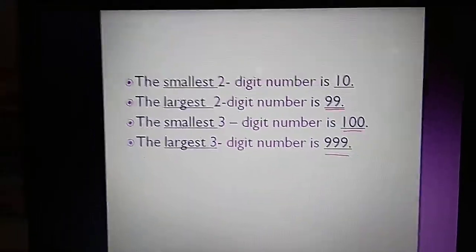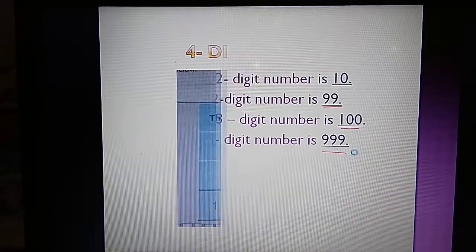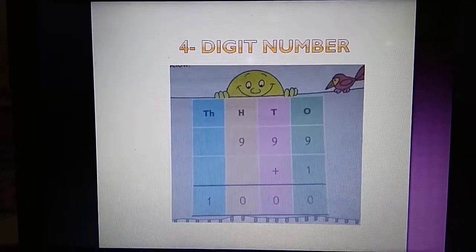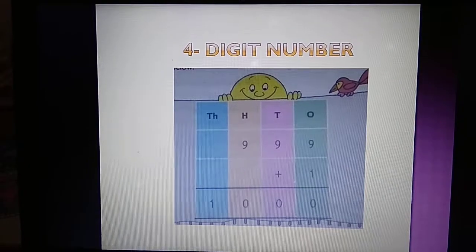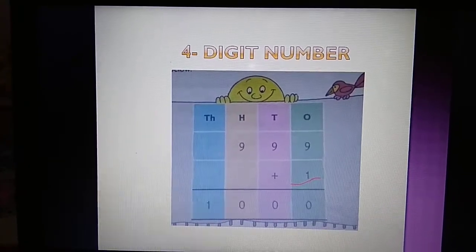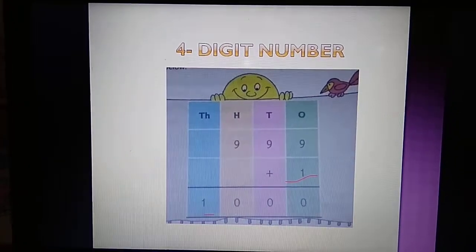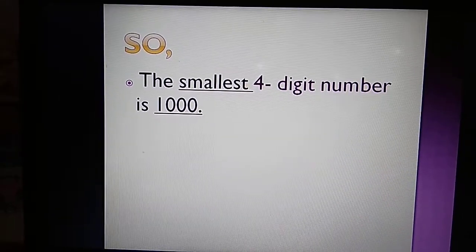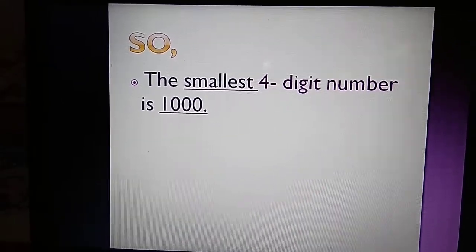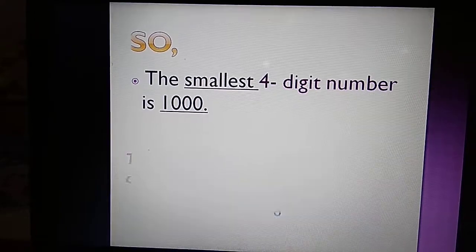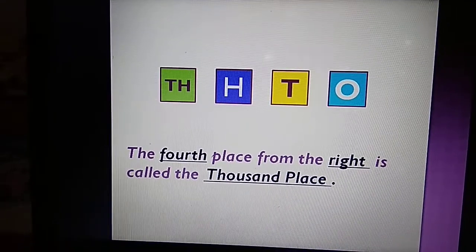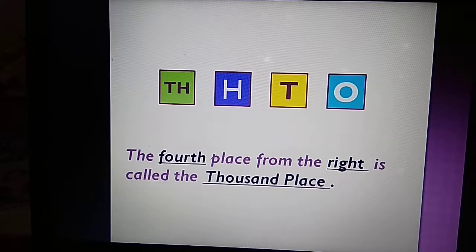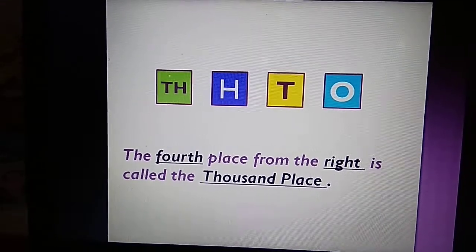Now we shall learn about 4-digit numbers. If we add 1 to 999, we will get 1000. So the smallest 4-digit number is 1000. As shown, the 4th place from the right is called the 1000s place.